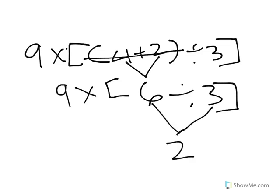And then you cross this out and bring everything else down, which is the multiplication and the 9. 9 times 2 equals 18.